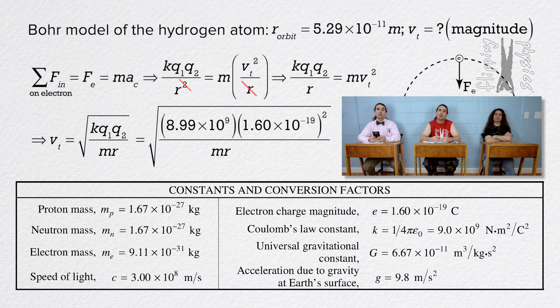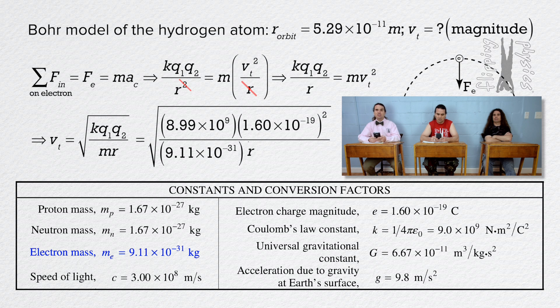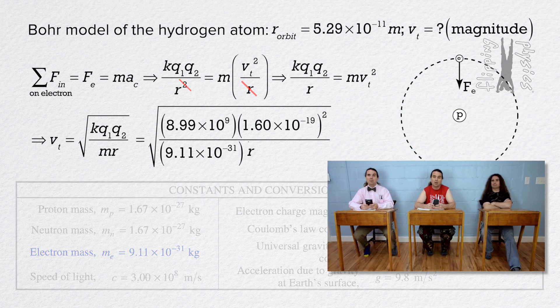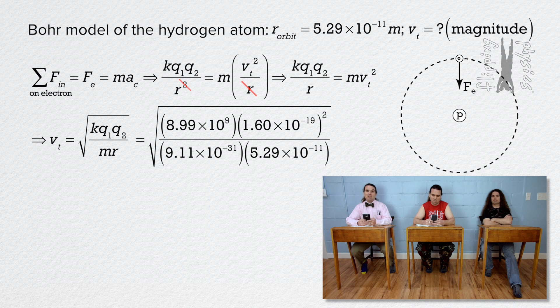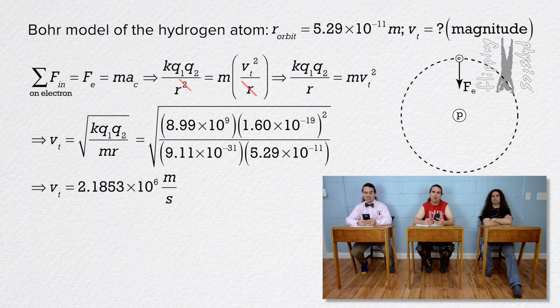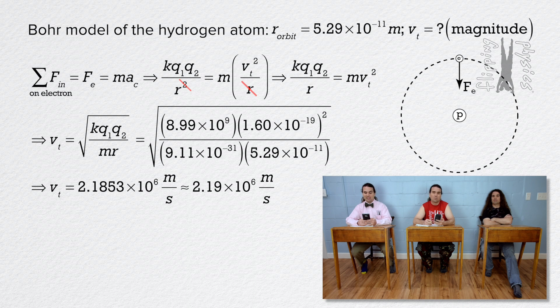Yeah. Okay, so the mass of an electron is 9.11 times 10 to the negative 31st kilograms, and the radius of the orbit of the electron was given in the problem as 5.29 times 10 to the negative 11 meters. That means the speed of the electron equals 2.1853 times 10 to the sixth, or 2.19 times 10 to the sixth meters per second with two significant digits.